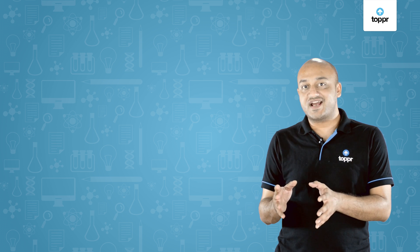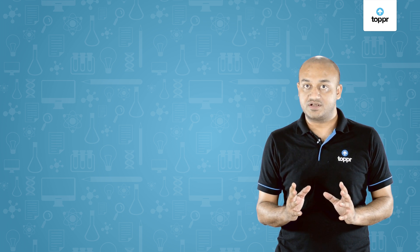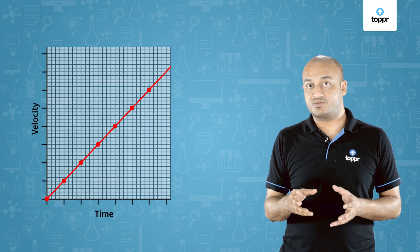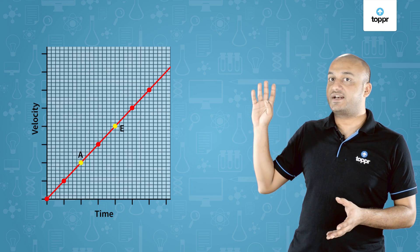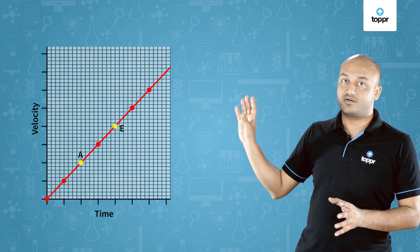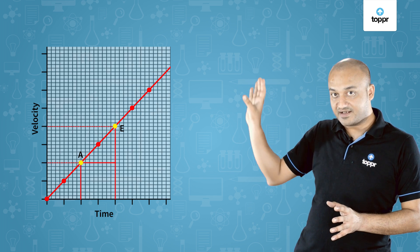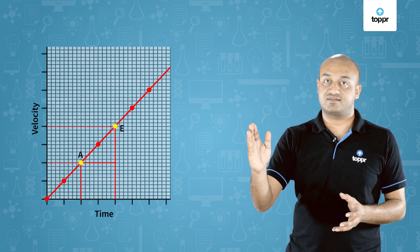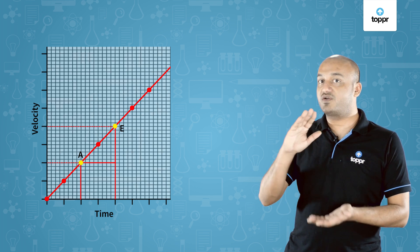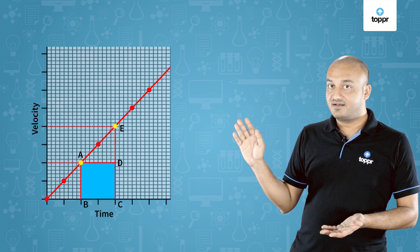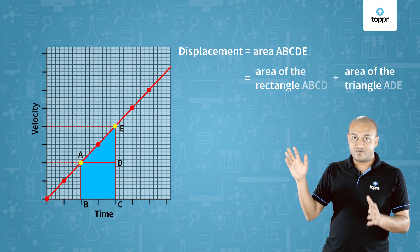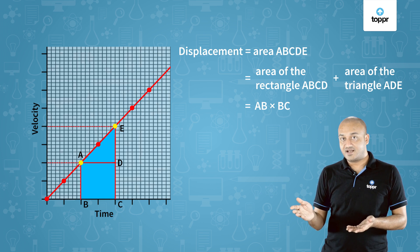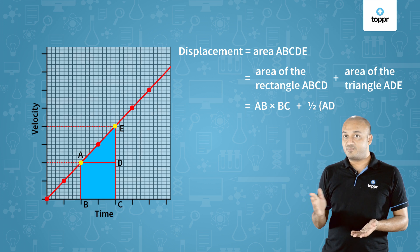Now we will talk about how the velocity time graph can be used to find the displacement value. On a velocity time graph showing uniformly accelerated motion, picking two points A and E, the area covered between those two points represents the displacement. This area is a combination of two shapes: the rectangle ABCD and the triangle ADE. Summing these two areas gives the displacement — the rectangle area is length times breadth, and the triangle area is 1/2 times base times height.